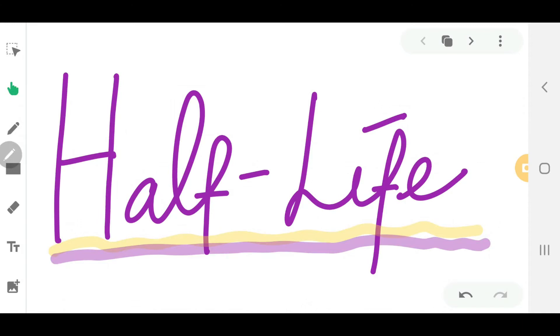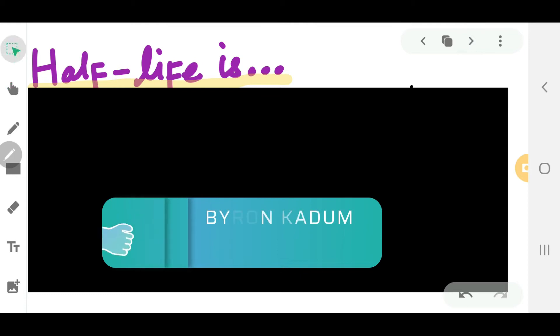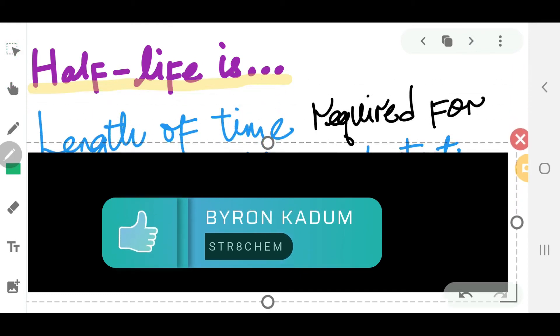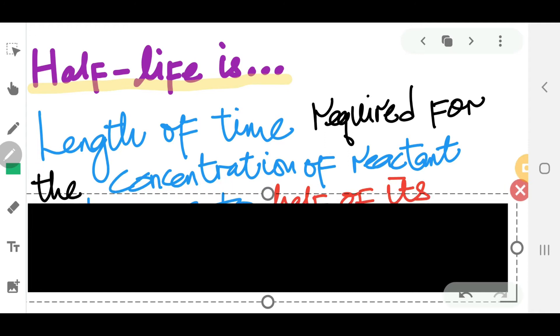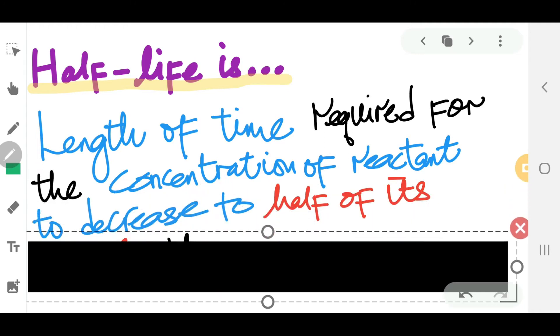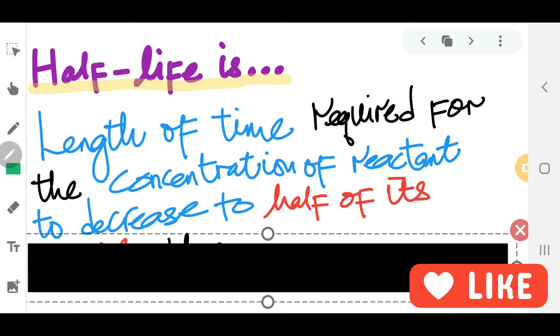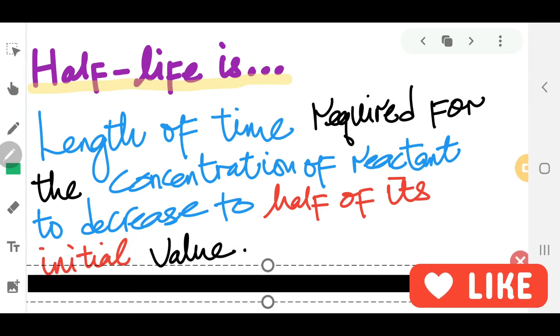Hi, in this rate camp video we're going to look at half-life. Half-life is defined as the length of time required for the concentration of reactant to decrease to half of its initial value.